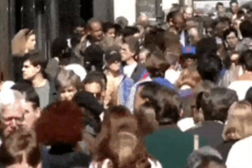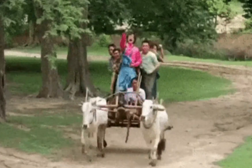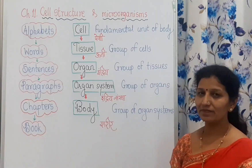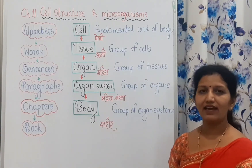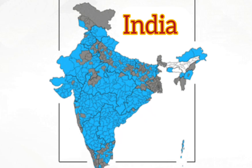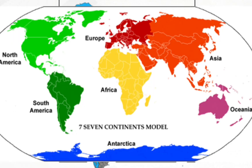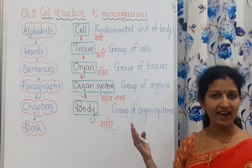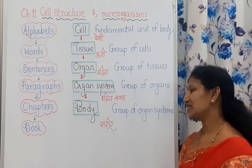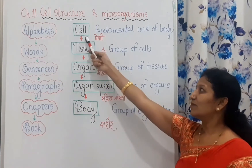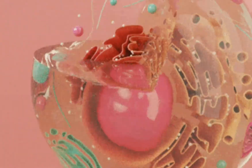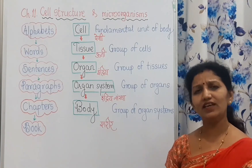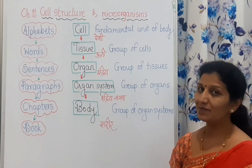Group of bodies forms a community, group of communities forms a village or city, a group of cities forms a state, then a country, and then the world and universe — all these are ultimately based on the cell. In this way, the cell is very, very important in our body.